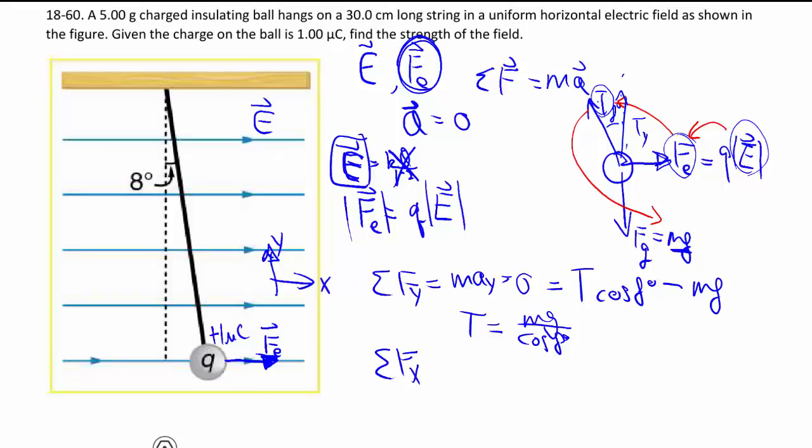Then we move on to sum of forces X, right, this is sum of forces Y, moving back to sum of forces X. M-A-X is equal to zero, and that lets us talk about what Fe is, because Fe is positive, minus T in the X direction, going the other way, and that's sine of 8.